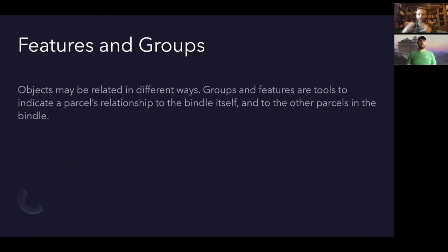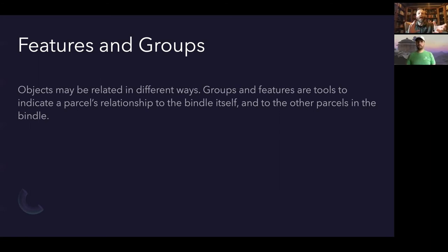In addition, we have the notion of features and groups as ways of describing relationships between different objects inside of an invoice. Imagine an application that had both a web UI and a desktop UI — a lot of the logic is the same, so you'd have core resources in one group and a web UI group with HTML and CSS files. Groups let you say which parcels belong where and define required relationships. Features are more special — for example, if a system has a GPU, you might want to turn on a feature to take advantage of it, whereas on a platform without one you wouldn't. Features and groups together are tools to indicate a parcel's relationship to the bundle and to the other parcels inside it.